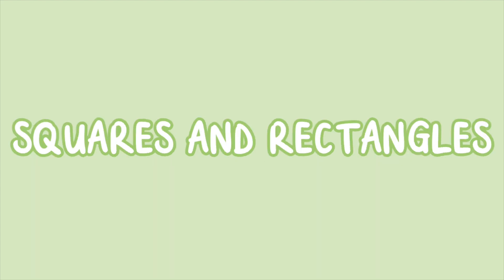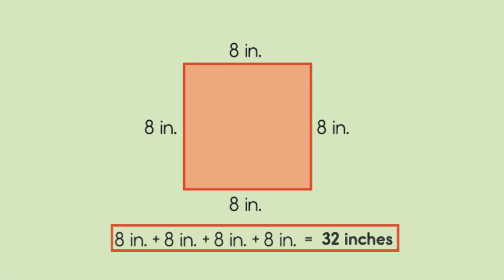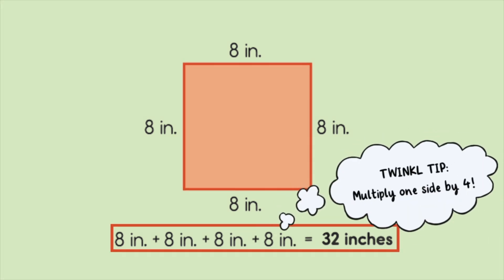Squares and rectangles. To find the perimeter of a square, add up all four sides. Since all sides are the same length, you can also multiply one side by four.